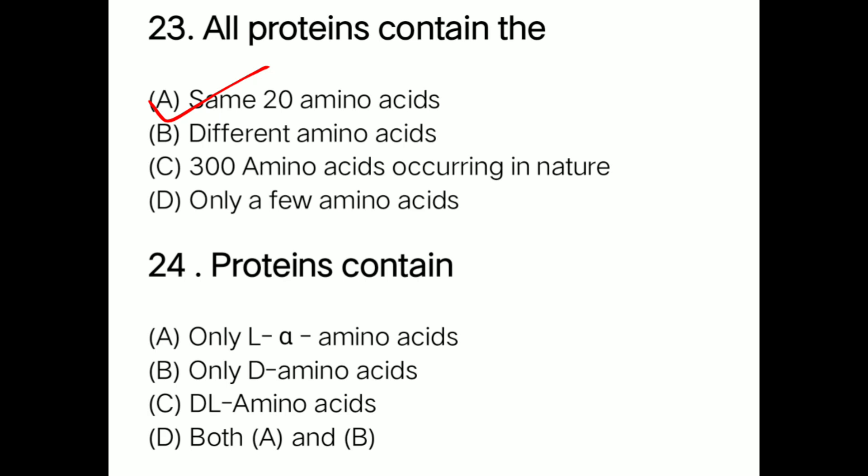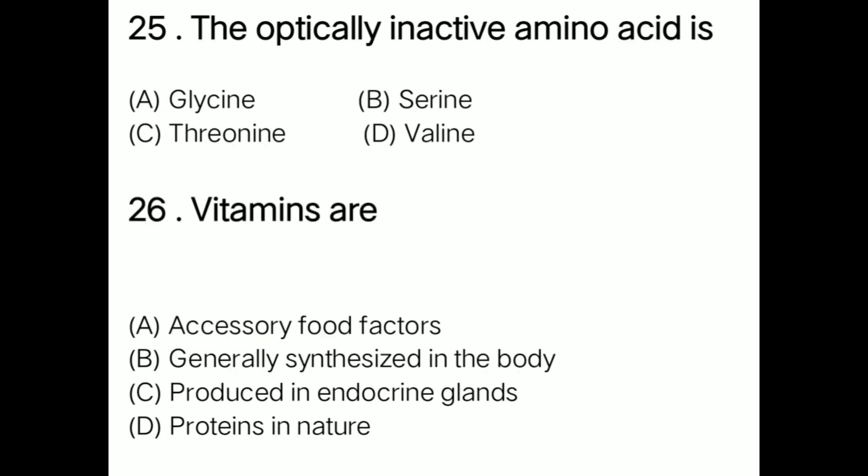Question: Proteins contain option A only L-alpha amino acids, option B only D amino acids, option C DL amino acids, option D both A and B. Correct answer is option A: only L-alpha amino acids. Question: The optically inactive amino acid is option A glycine, option B serine, option C threonine, option D valine. Correct answer is option A: glycine.